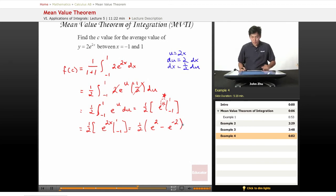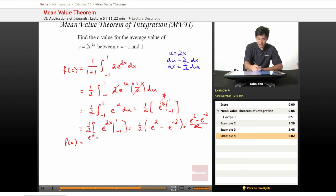Which means that, rewriting this a little bit, so f of c equals e squared minus e to the negative 2 over 2.